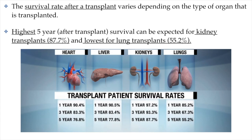The survival rate of transplants will vary depending on the type of organ transplanted. Usually we look at the one, three, and five-year survival rates. Kidney transplants have one of the highest survival rates — 97.2% of patients survive the first year, and by year five, about 87.7% have survived. Liver has a fairly good survival rate, hearts are a little lower, and one of the lowest is lung transplants. For lungs, 85% of patients make it through the first year, but by year five only about 55% have survived their lung transplant.